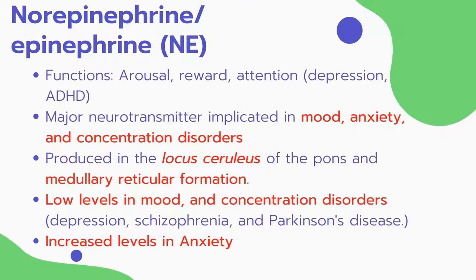The first neurotransmitter is norepinephrine, also referred to as epinephrine. Norepinephrine functions in arousal, reward, and attention, and can be implicated in people with depression or ADHD. It is a major neurotransmitter implicated in mood, anxiety, and concentration disorders, and is produced in the locus coeruleus of the pons and medullary reticular formation.